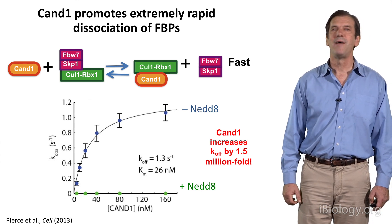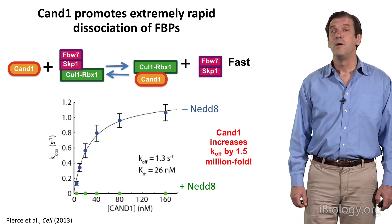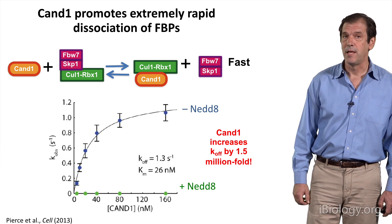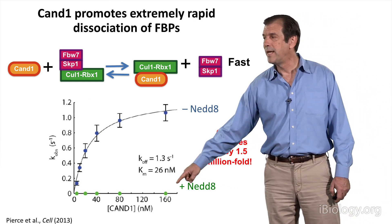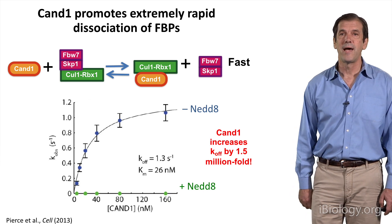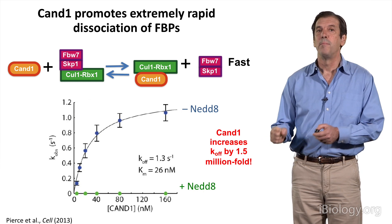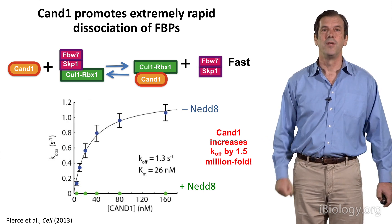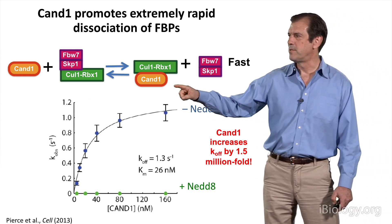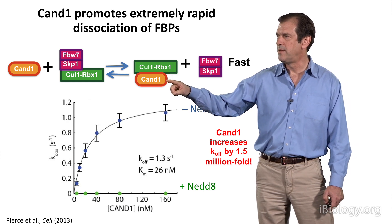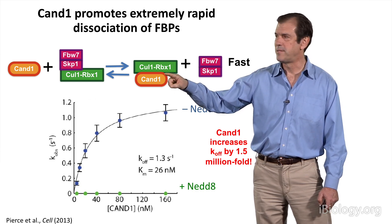A key point is that those rates Nathan was measuring were done with CUL1 not modified with NEDD8 — the naked CUL1. If you put NEDD8 on CUL1, CAND1 can no longer break that complex apart. So CAND1 can essentially kick an F-box off, but only if the NEDD8 is first removed. And remember, the removal of NEDD8 is gated by substrate. The CUL1 bound to CAND1 forms a very stable complex, so how does the cell resolve that situation?